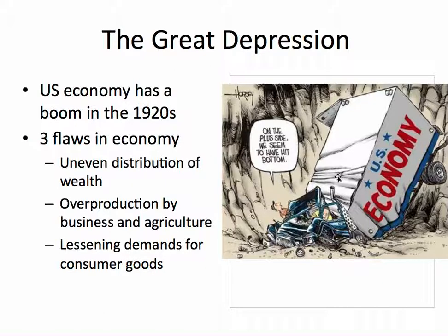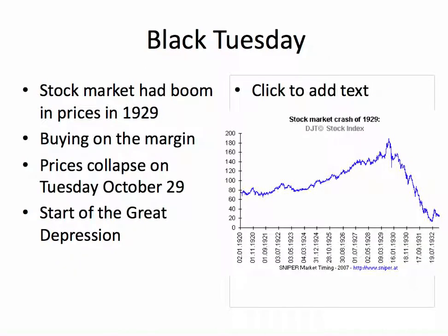Here's a very famous political cartoon where the U.S. economy has crashed, and that's what happens on Black Tuesday. On Black Tuesday in 1929, the stock market had a boom in prices — it goes all the way up to about 1929 and shoots up again. And the reason it was happening is they were buying on the margin. This is when you're buying on your credit card — you buy stocks in 1927 even though you don't have the money. You get a loan from your stockbroker, and you can pay it back because the stock's always going up. This works as long as prices go up. When the prices collapse on Tuesday, October 29, this starts the Great Depression.